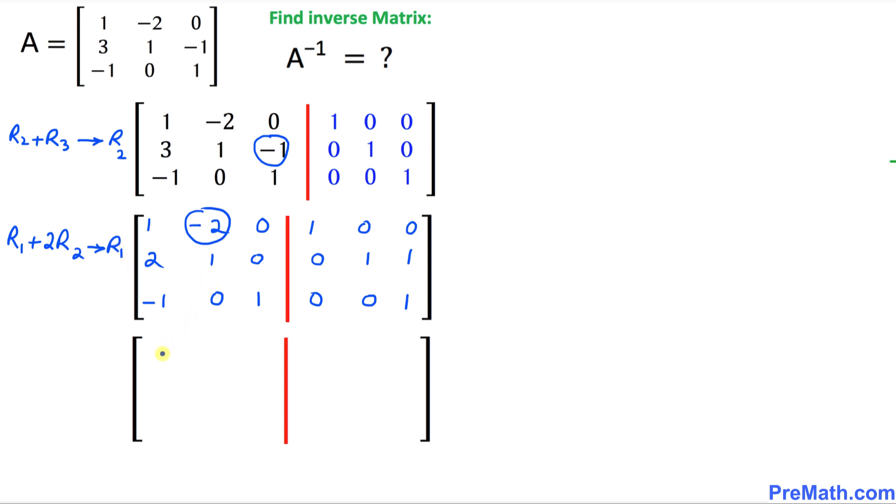So that is going to give us, if you simplify that thing, 5, 0, 0. As you can see, and on the right hand side, it simply becomes 1, 2, 2. The rest is going to stay the same, because we are only dealing with the first row. So this is 0, 1, 1, and then negative 1, 0, 1, 0, 0, 1. And now,